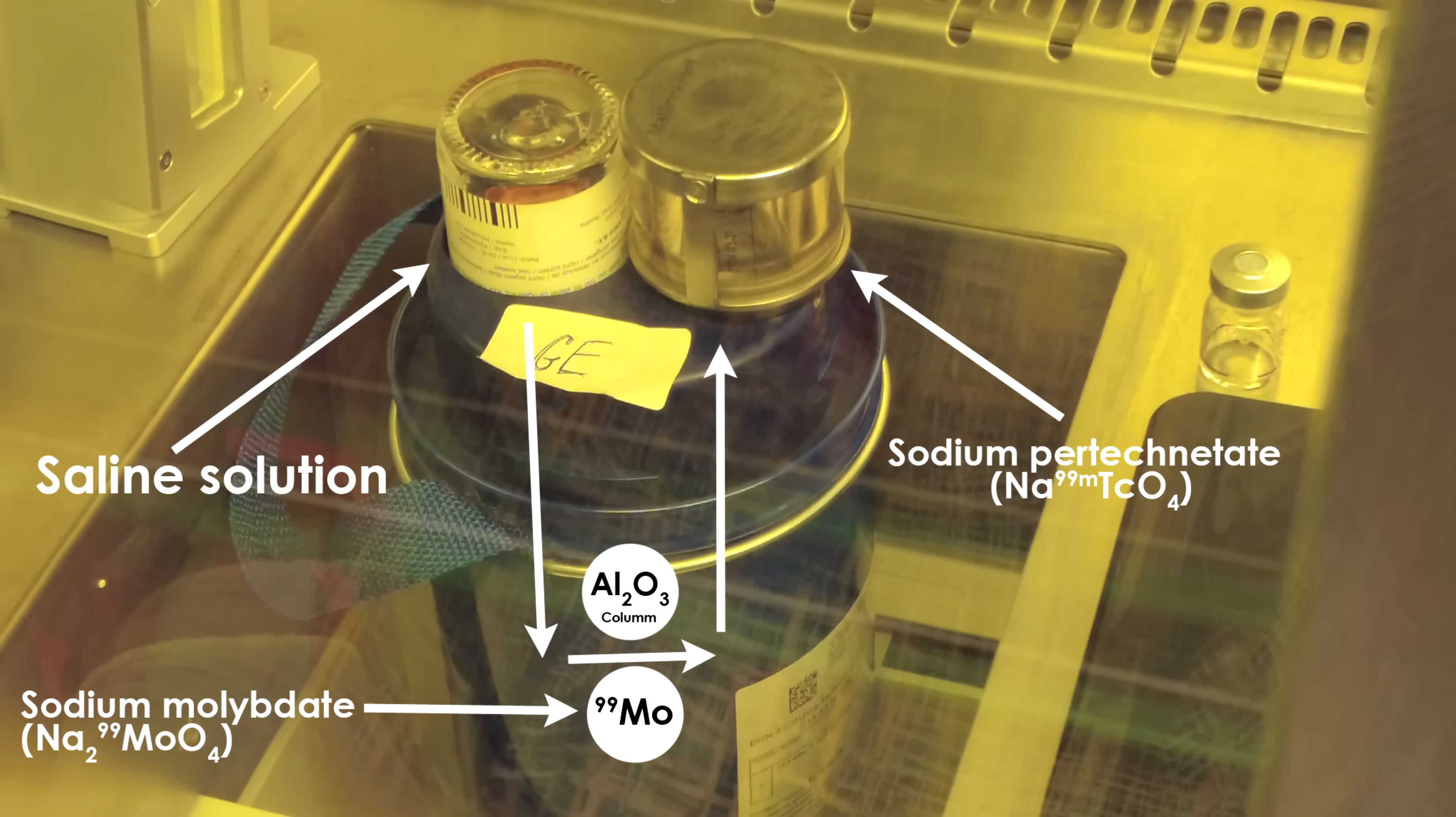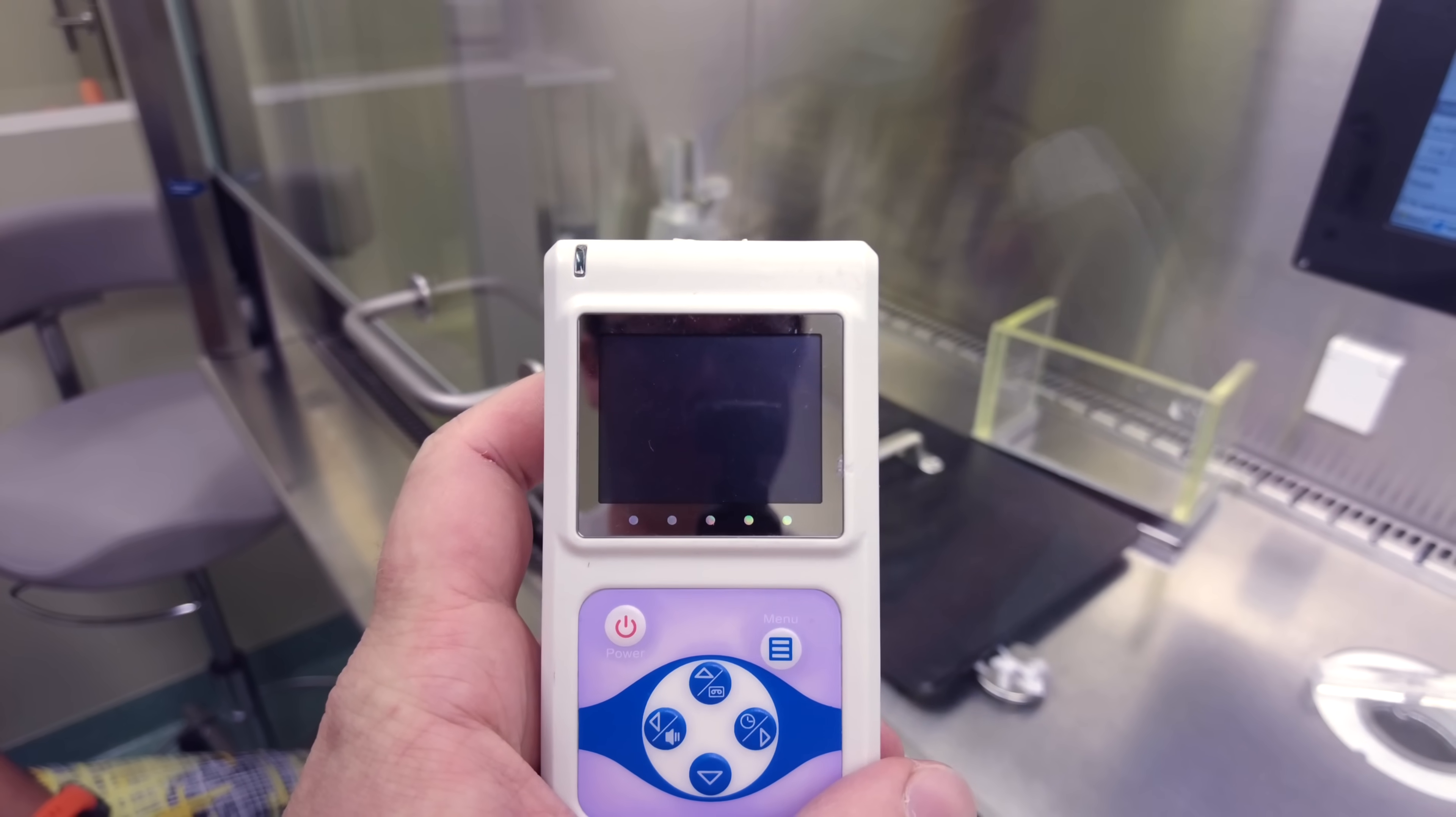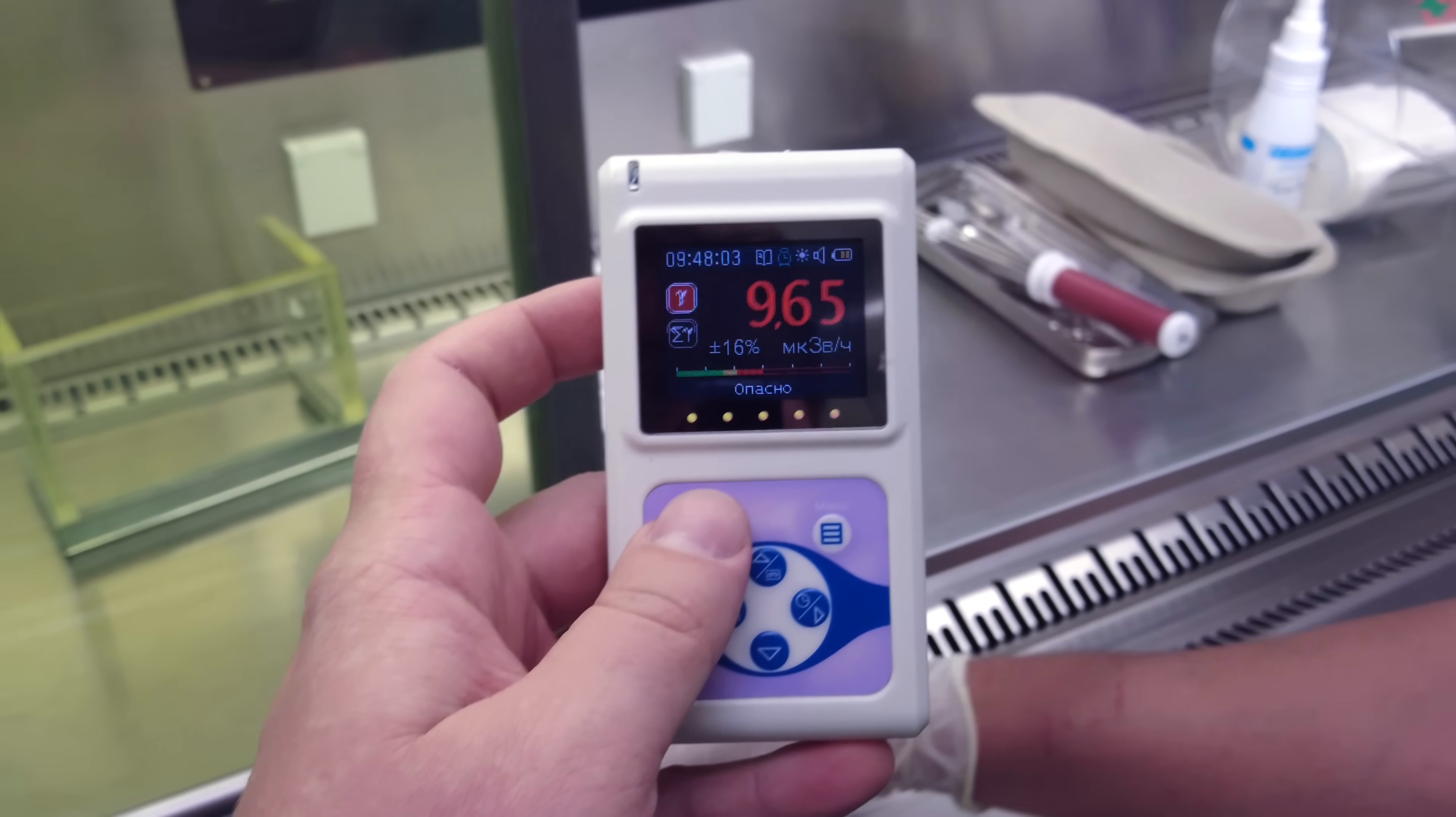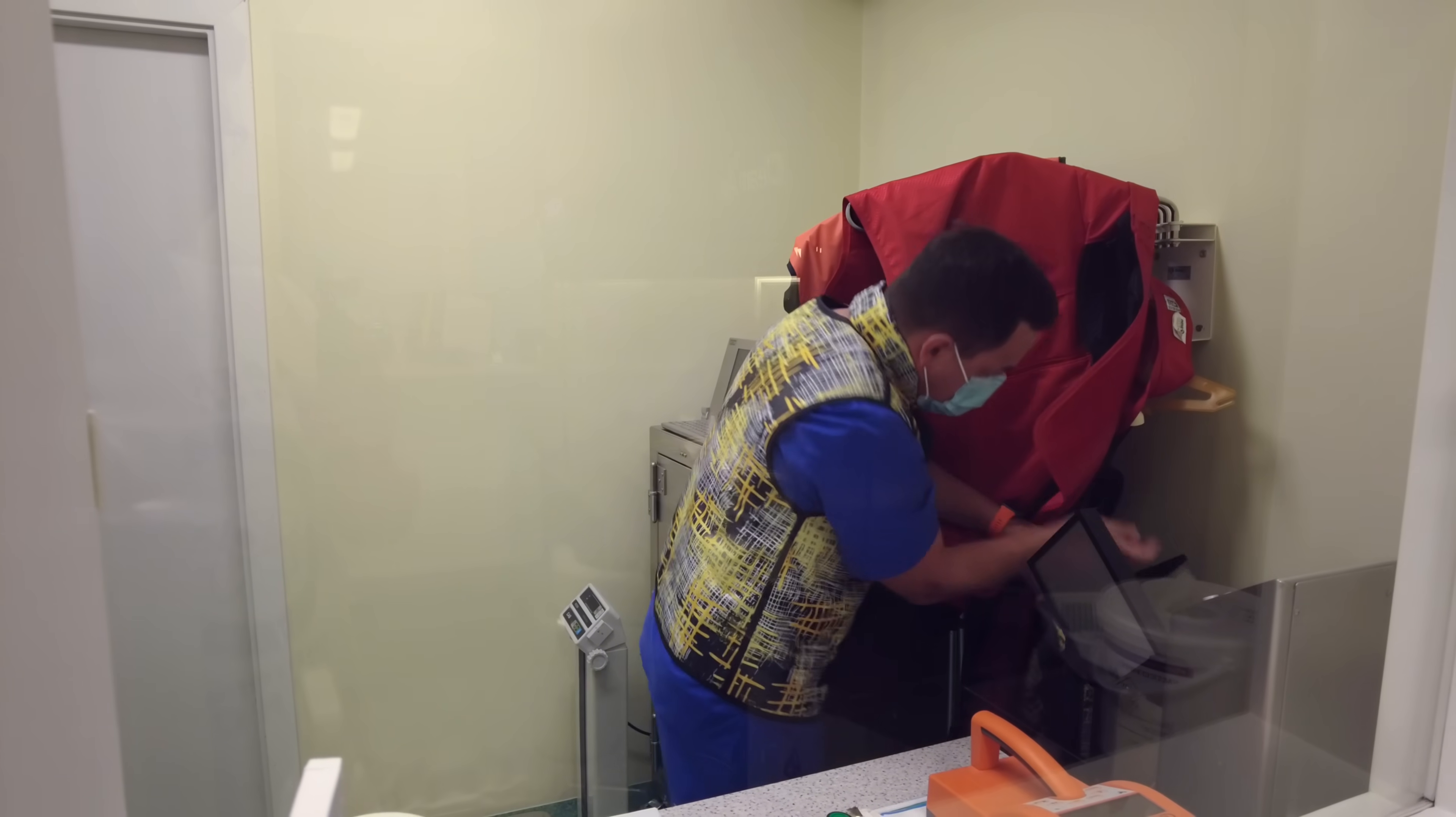After that, the solution containing technetium, or in other words sodium pertechnetate, is separated from sodium molybdenum and is sent to the upper ampoule. As soon as technetium comes off the generator, my dosimeter immediately registers increased background radiation, because technetium-99M radiates a rather powerful stream of gamma rays. For safety purposes, lead glasses are installed in the fume hood where technetium is synthesized. They almost fully absorb gamma rays. Workers also wear special protective gear to protect themselves from radiation.